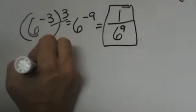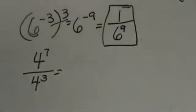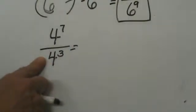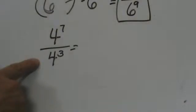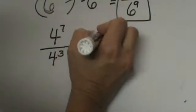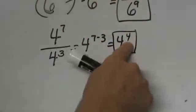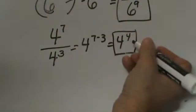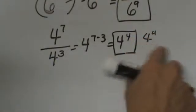Now let's look at division. What if we have 4 to the 7th over 4 to the 3rd? On multiplication we added exponents, so remember on division we subtract exponents. These two bases are alike, so all I have to do is subtract my exponents. I am going to take 4 to the 7 minus 3, and that is going to be 4 to the 4th. Notice I have a positive exponent here, so the answer is just 4 to the 4th — we know that is a whole number.